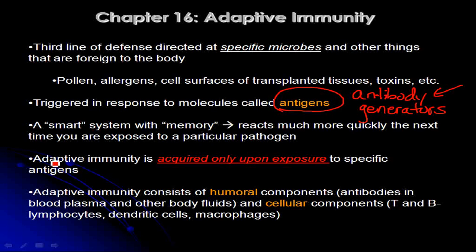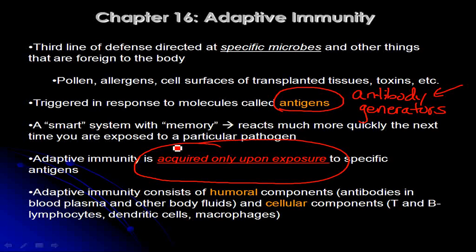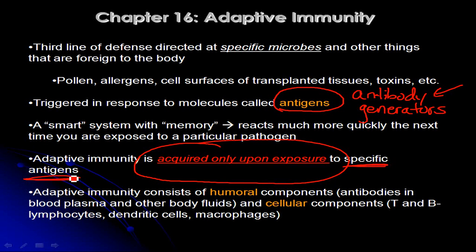Another key feature of adaptive immunity — and this is really important — an adaptive immune response occurs only after you have been exposed to a particular type of pathogen or particular non-self thing. You've been exposed to very specific antigens on the surface of a pathogen or something else non-self. So if you've never been exposed to it before, you're not going to have adaptive immunity to it. Innate immunity, on the other hand, consists of things you have naturally, even before any prior exposure.